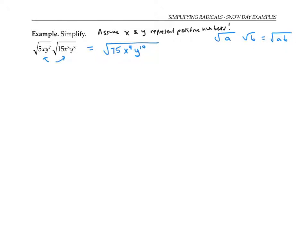Now I want to simplify by pulling as much out of the square root sign as I can. If 75 were a perfect square, I could just take the square root of it, but since it's not, I'm going to factor it. So 75 is 25 times three, and 25 is five times five, so I can write that as five squared times three. Now I can write my square root of five squared times three times x to the fourth times y to the tenth.